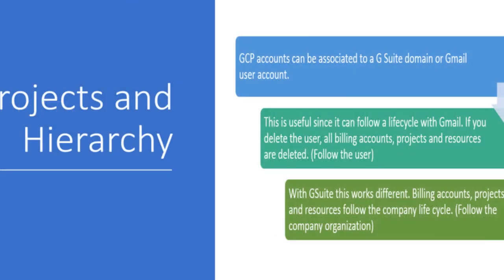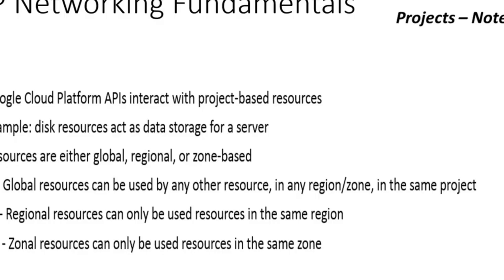When it comes to Google Cloud accounts, if we're using G Suite we're likely going to have a lifecycle propagated. When we talk about projects, it's important to realize that resources can be global, regional, or zonal. A global resource — such as an IP address used for load balancing — is a global resource. A regional resource, like App Engine, is only used in that region. From a routing and networking perspective, we'll talk about what is regional, zonal, and global when we get into some of the demos.